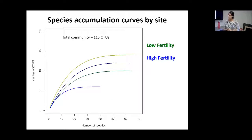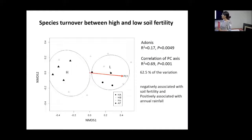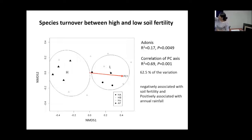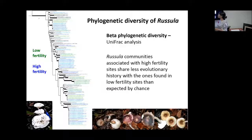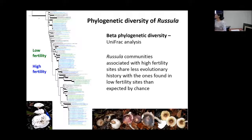We found that Russula was the most abundant genus associated to Oremunia, which makes sense because it is one of the ectomycorrhizal genera that evolved in the tropics and moved to temperate forests, so it makes sense that it is very diverse and abundant here. We did not find any significant difference in species richness between high and low fertility sites, opposite to our predictions. But we did find differences in species composition between high and low fertility sites.